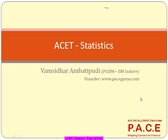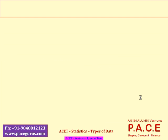Whenever we talk about statistics, the first thing we would be doing is data analysis. The meaning of statistics is typically something to do with data and the analysis of that data. From that standpoint, the first thing I would like to look at is the types of data — what do we mean by types of data, and how many kinds of data typically exist?